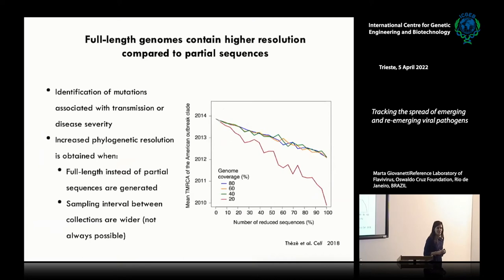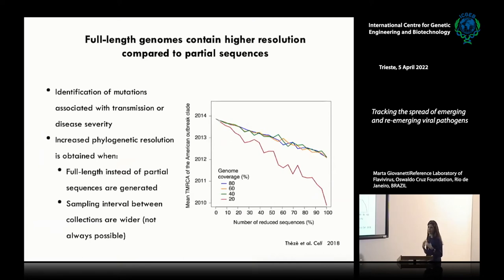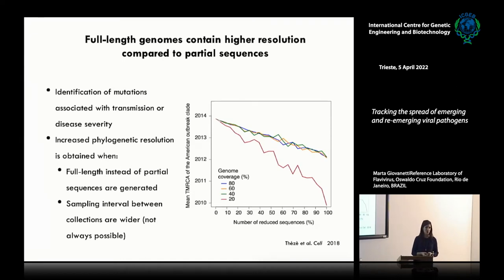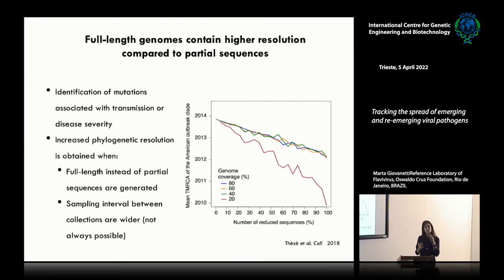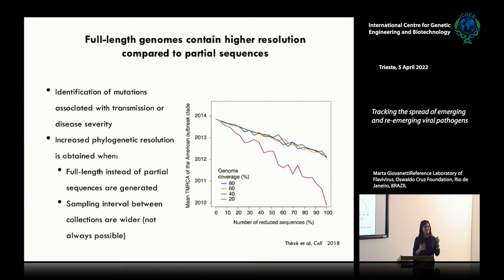Considering this, one of the main objectives is to understand why it appears to be absolutely challenging to obtain a complete genome sequence from emerging viral pathogens. We know that full-length genomes contain much more information compared to partial strains. So by analyzing complete genome sequences in depth, we have the possibility to detect possible site mutations that can also explain differential clinical outcomes.